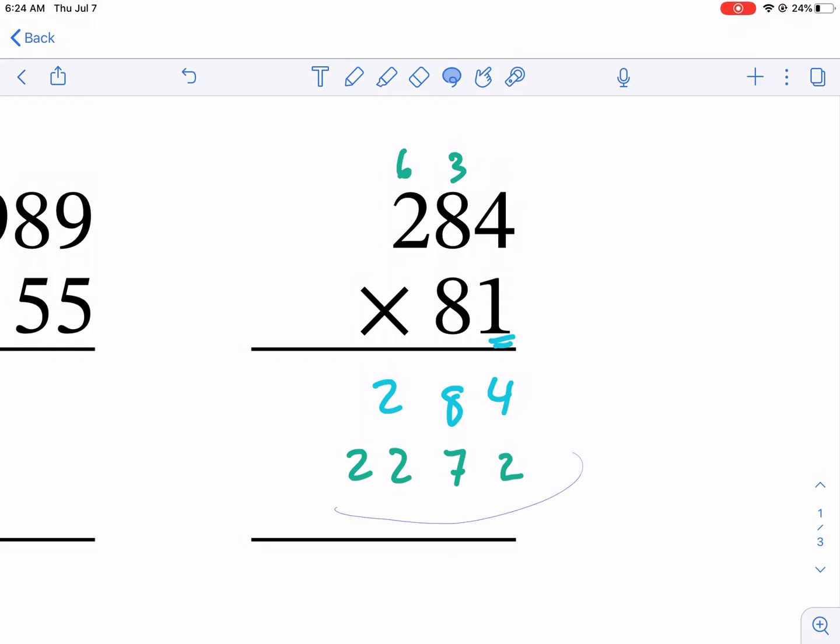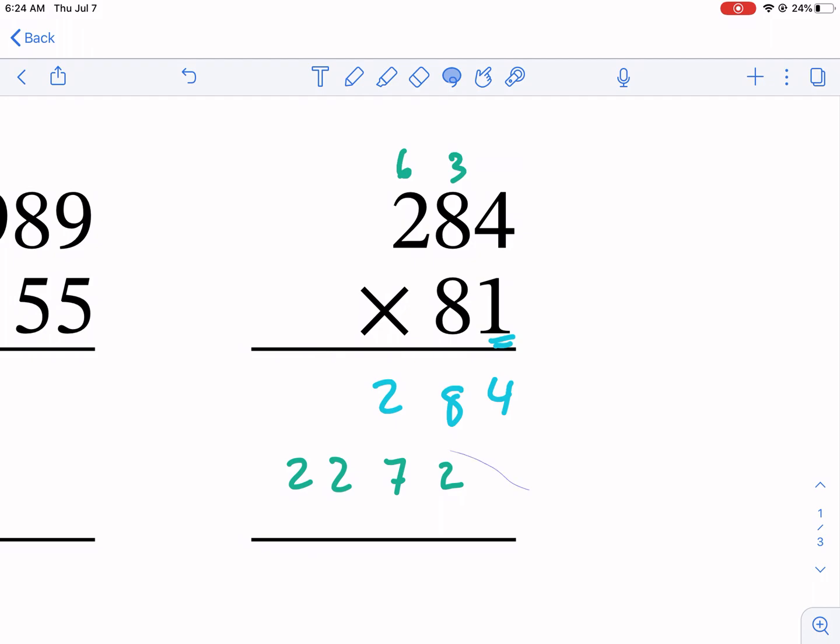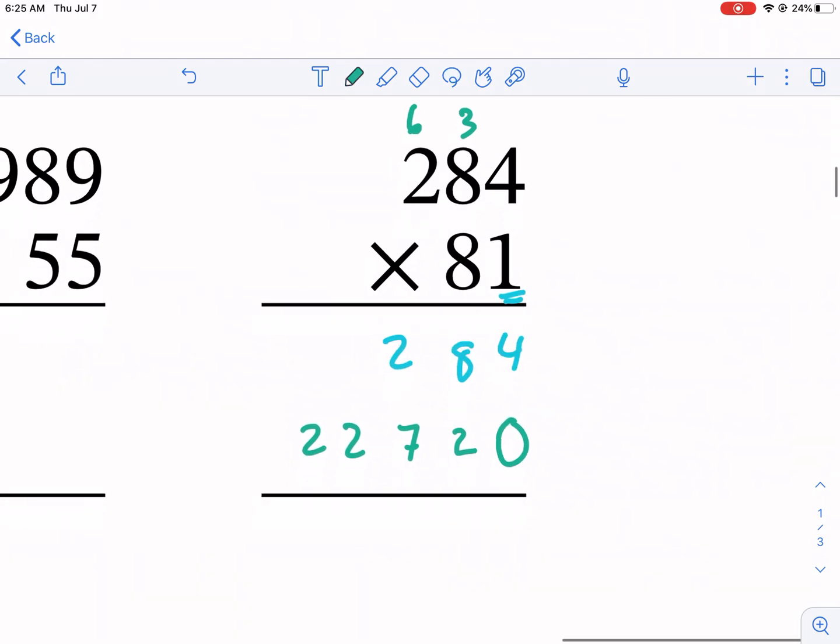I hope you do, because what I did is I forgot to write the 0. It changes the problem completely. Imagine if we had just added those digits together - we'd get a number that's around 2500, right? Around 2500.